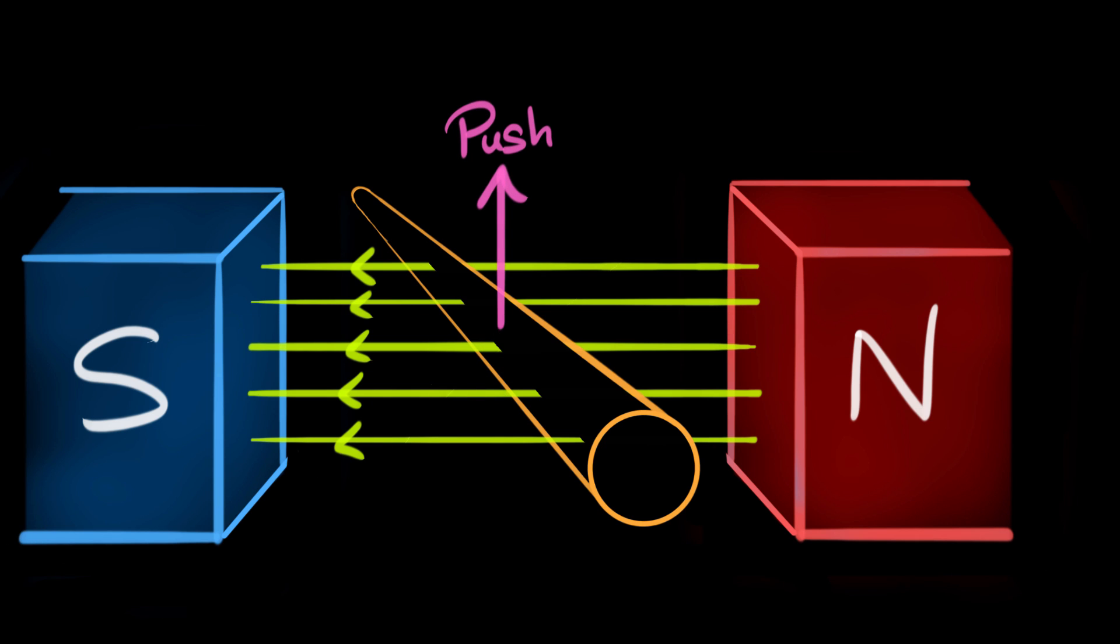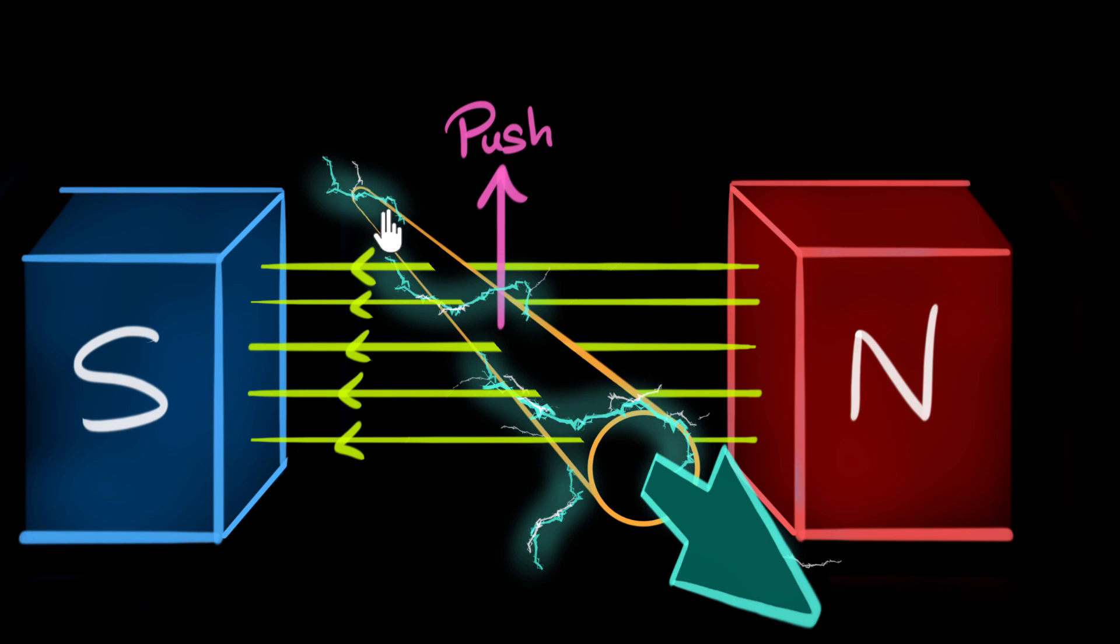Then it turns out if you do the experiment, the current induced in this wire is going to be out of the screen. So the current will flow out of the screen this way.